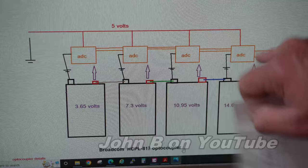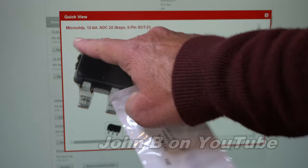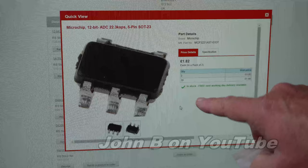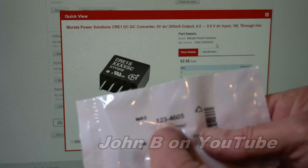So before ordering four of these ADCs, I thought I'd buy two of these. So first of all, while I'm on the RS page, here's the microchip 12-bit ADC. 22.3 kilo samples per second, SOT 23 5 pin. £1.82 plus the VAT each.